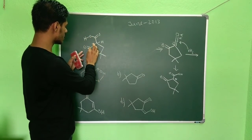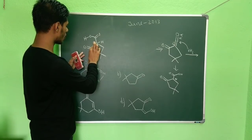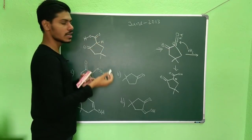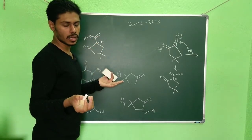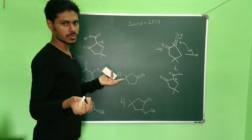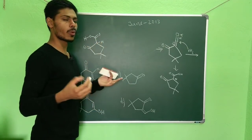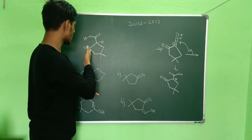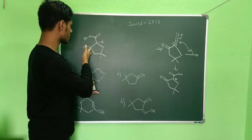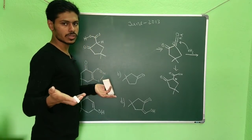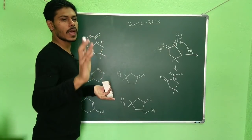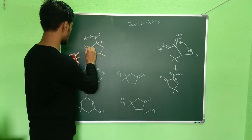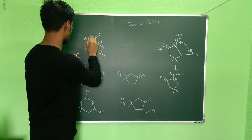Now you can see this is a 1,3-dicarbonyl situation — specifically a 1,3-dicarboxylic acid, or rather one position is a ketone and the other is a carboxylic acid. This arrangement is sufficient for decarboxylation to occur.